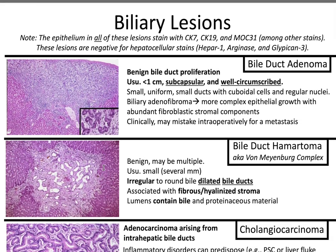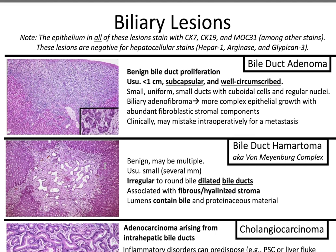Biliary lesions. The epithelium in all of these biliary lesions stains with CK7, CK19, and MOC-31, among other stains. As you may recall, hepatocellular lesions are negative for MOC-31. These biliary lesions are negative for hepatocellular stains: HepAR1, arginase, and glypican-3.